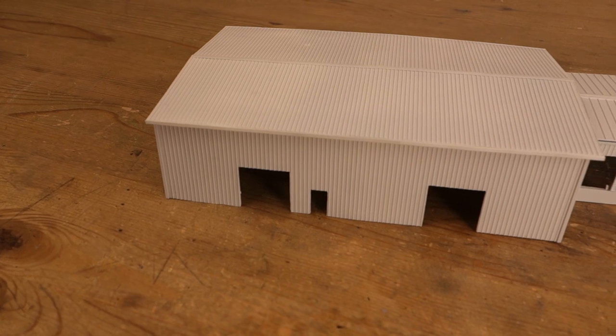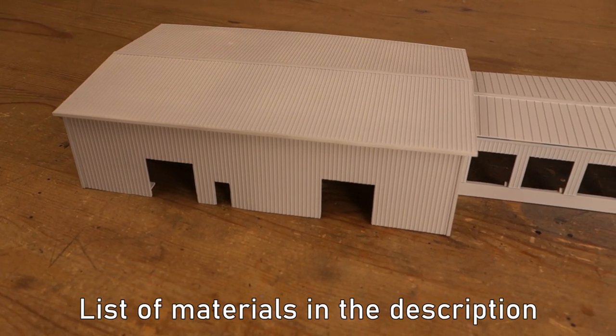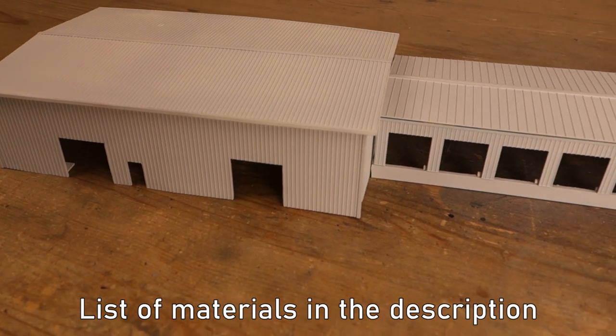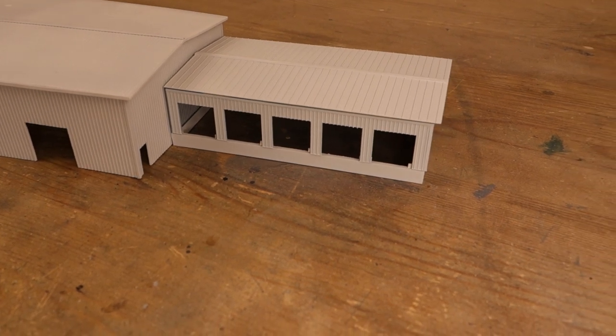Before painting with the actual colors, I used Vallejo 74.601 gray surface primer, slightly thinned with Vallejo 71.161 airbrush thinner, so the nozzle of the airbrush doesn't clog up too quickly.